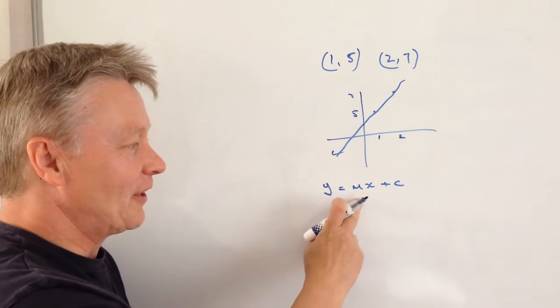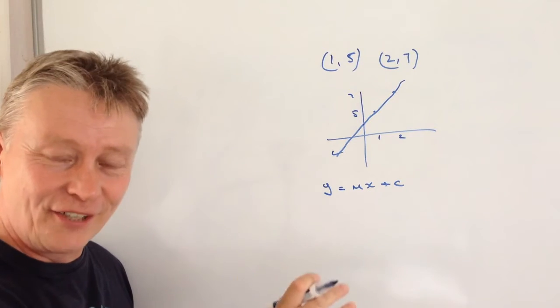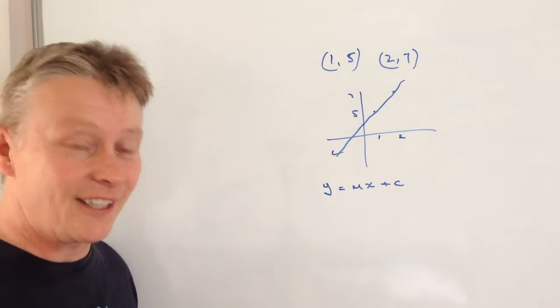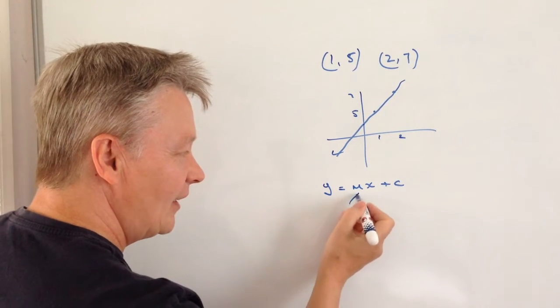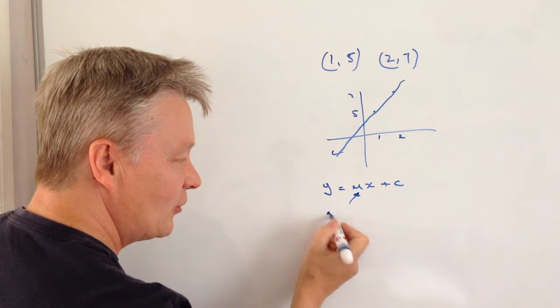Now I know in different kind of textbooks you'll see it written in slightly different ways, but essentially it means exactly the same thing. That this value of m here is the gradient.